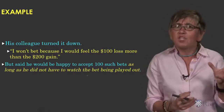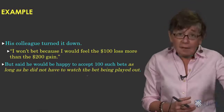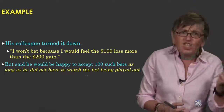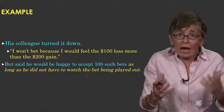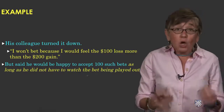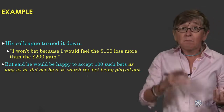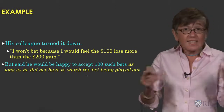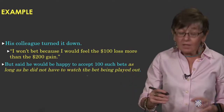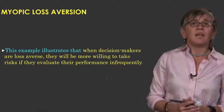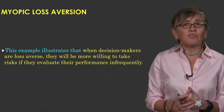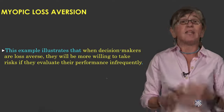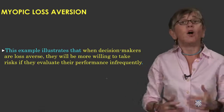Let's dissect his colleague's response a little more. That he doesn't want to accept the single bet illustrates loss aversion. But in addition, the role of mental accounting is illustrated by noting that he is willing to accept more such bets as long as he doesn't have to watch them — even though the single bet by itself is unattractive to him. This example illustrates that when decision makers are loss averse, they will be more willing to take risks if they evaluate their performance infrequently. This combination is what we call myopic loss aversion.